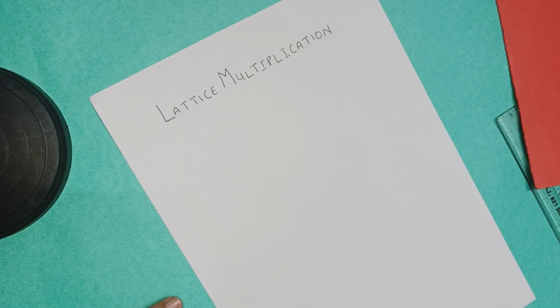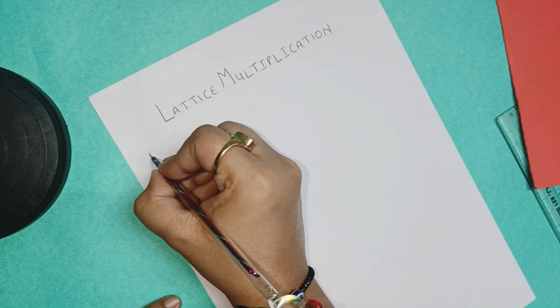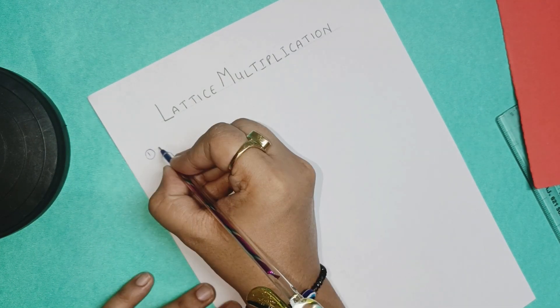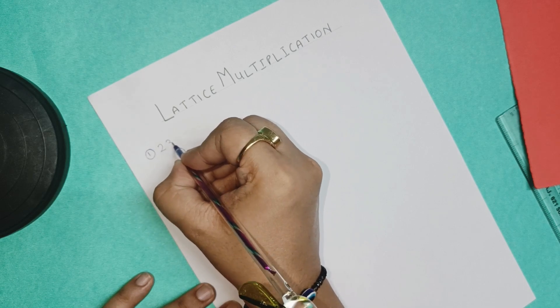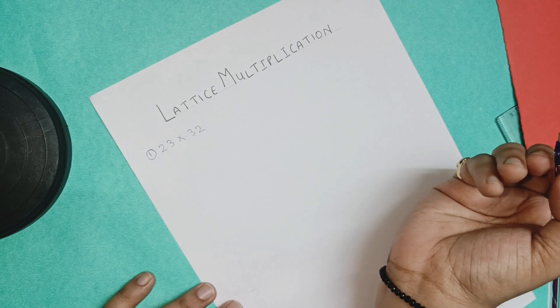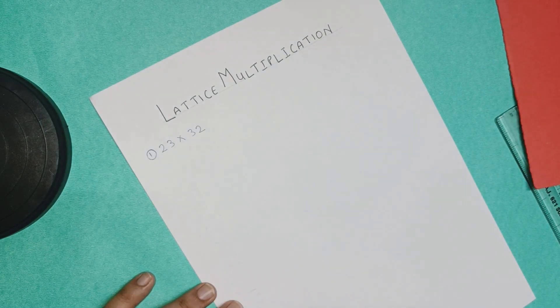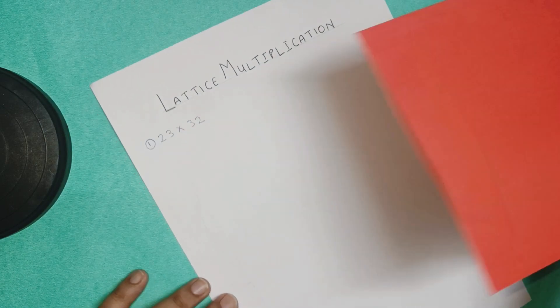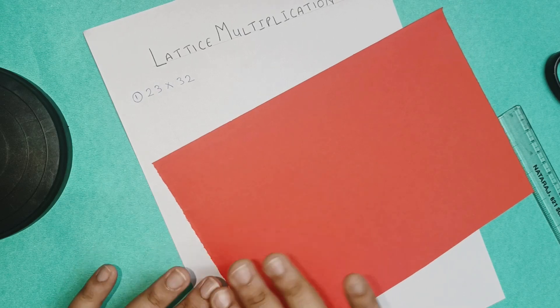Now let us start with the first question. I am writing here number 1, 23 to be multiplied by 32. Two digit number with a two digit number. In this activity we are going to use only two digit numbers.